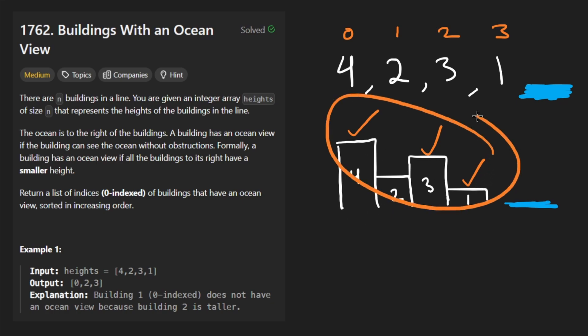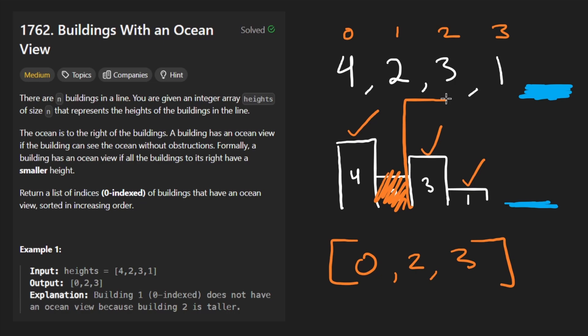So we see that these three buildings can see the ocean. We would return the indexes 0, 2, and 3 in that order. If you notice, you would always expect that the height is going to be in decreasing order. Once we filter out the buildings that can't see it, you would never expect there to be a building over here that's taller than the previous one because then this one would never be able to see the building.